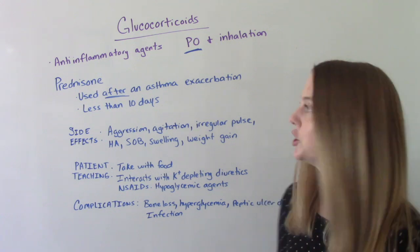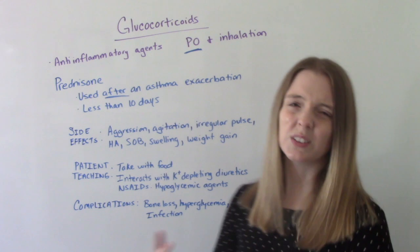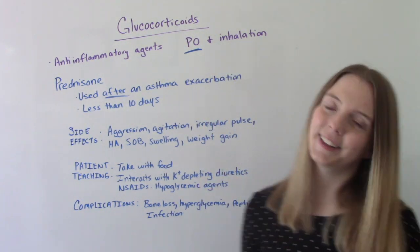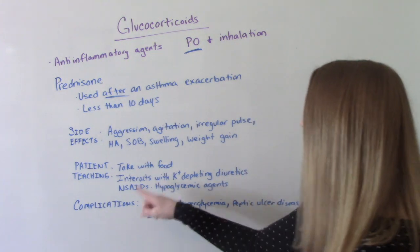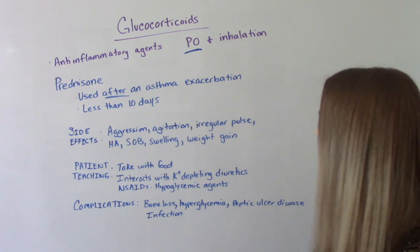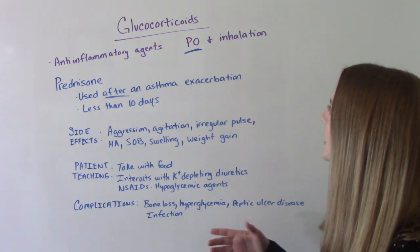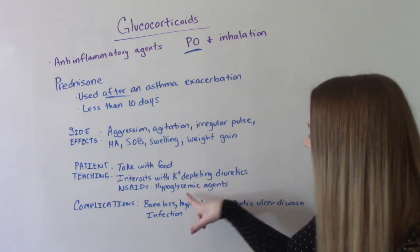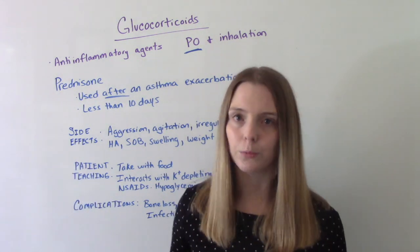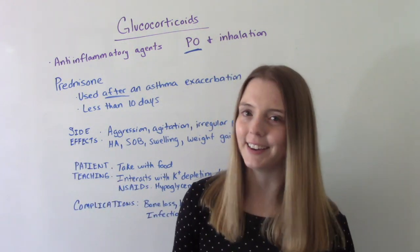Important patient teaching: you want them to take it with food or milk because it will upset their stomach if taken on an empty stomach. It also interacts with a lot of things — potassium-depleting diuretics, NSAIDs, and hypoglycemic agents. If your patient is taking a glucocorticoid and is on some sort of hypoglycemic agent, they might just cancel each other out and neither of them will work. So it's important to know all the things your patient is taking.